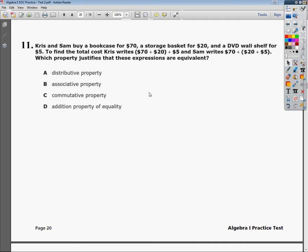Kris and Sam buy a bookcase for $70, a storage basket for $20, and a DVD wall shelf for $5. To find the total cost, Kris writes 70 plus 20 plus 5, and Sam writes 70 plus the quantity 20 plus 5. Which property justifies that these expressions are equivalent, which means they're the same thing?